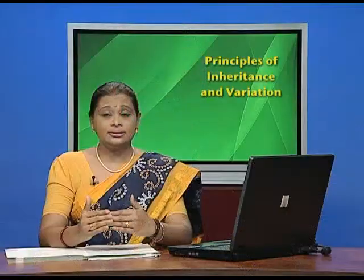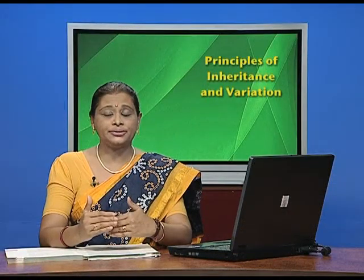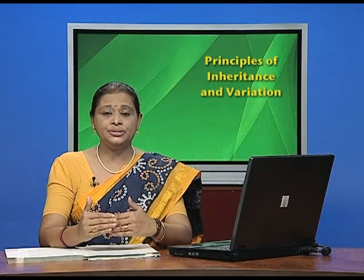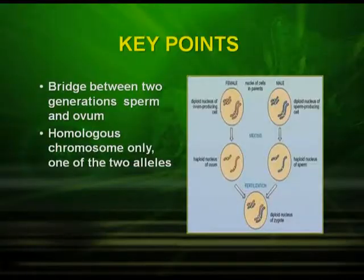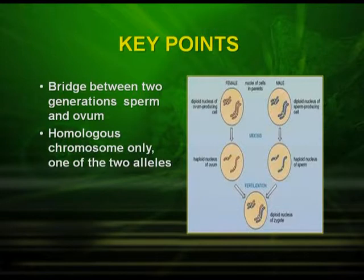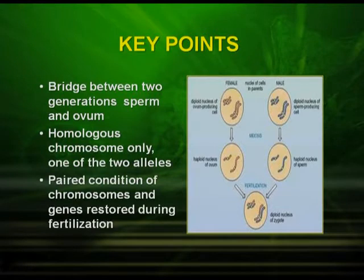The first very important point is the bridge between the two generations — the sperm and the ovum. The sperm and the ovum bridge two generations and they are produced by the diploid organism — the female producing the ova and the male producing the sperm. The gamete contains one homologous chromosome, while diploid organisms, whether male or female, contain two homologous chromosomes.